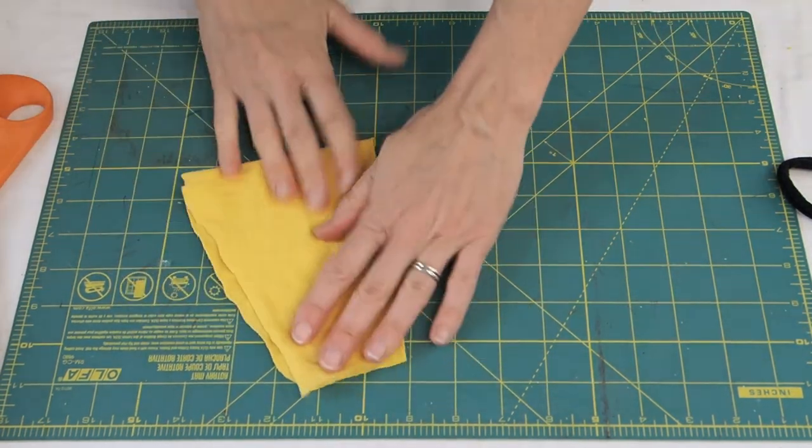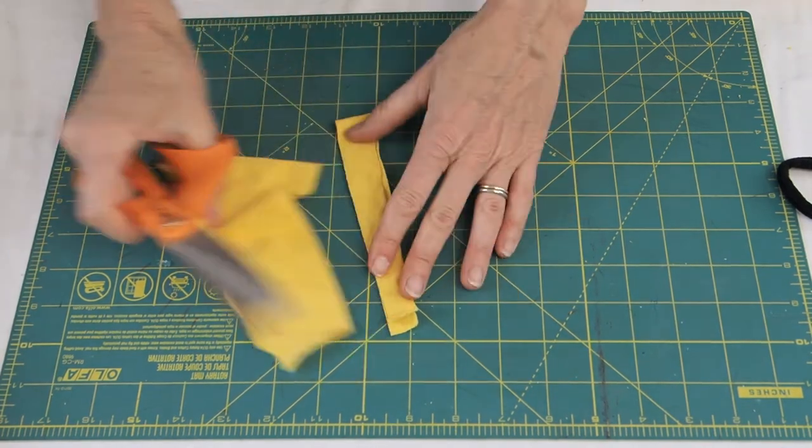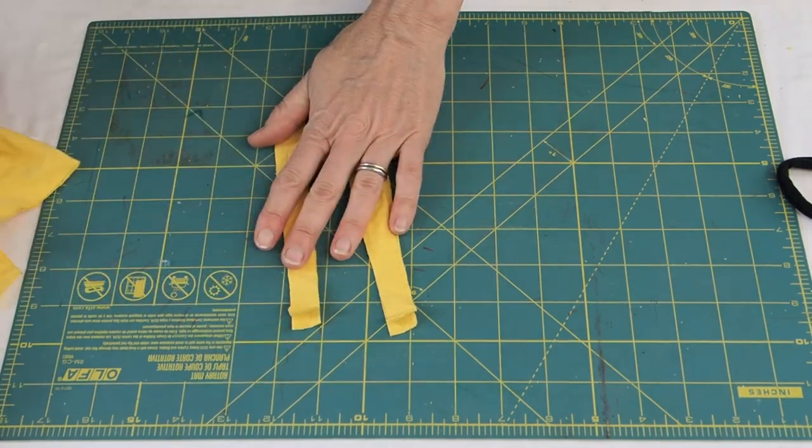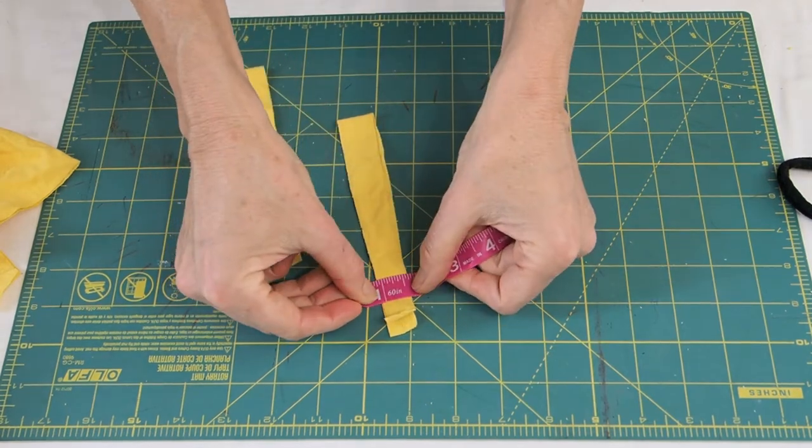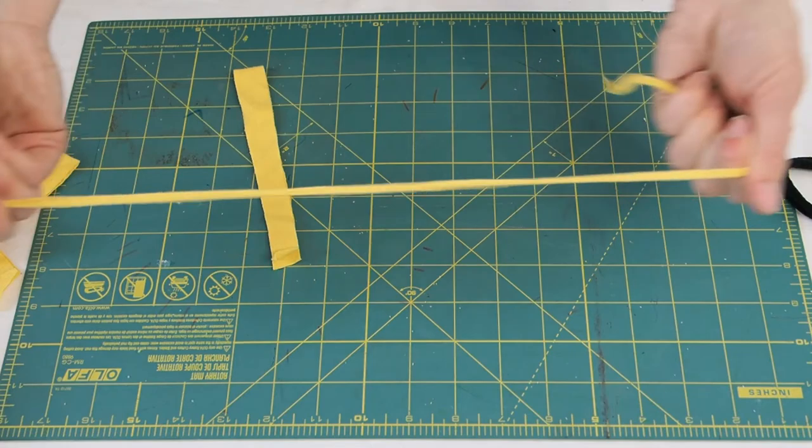Then I'm just going to fold it in half and cut some real thin strips. These strips are only about a half inch to a third of an inch wide. Just depends. It's easier to work with a thinner strip. So you can see that's only about a half an inch. I'm going to stretch those out real good. They get nice and thin when they're stretched out.